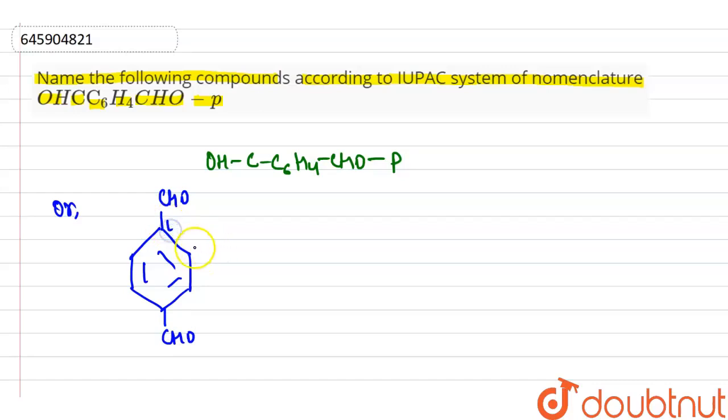And now we know the para position is our 1-4 position. Now our IUPAC name is benzene-1,4-dicarbaldehyde. So that is the IUPAC name of the above compound.